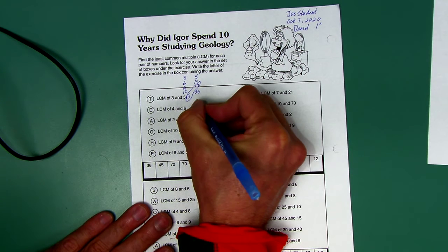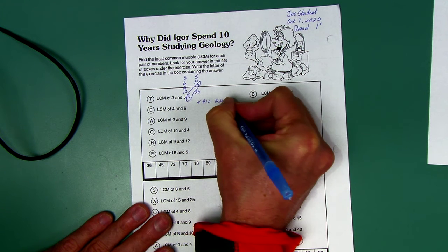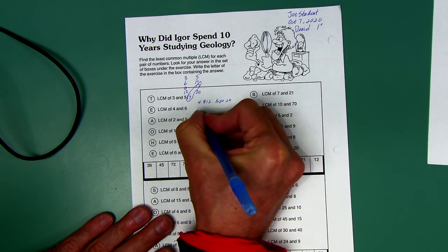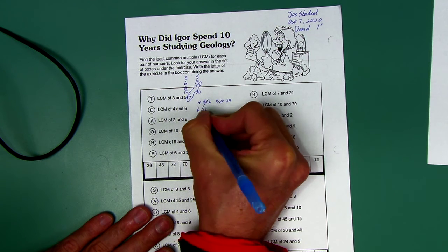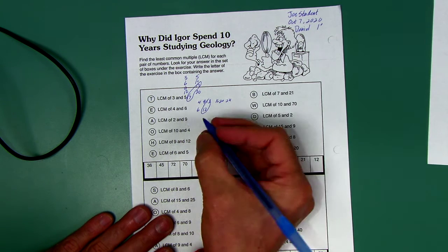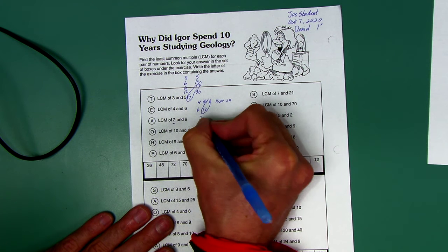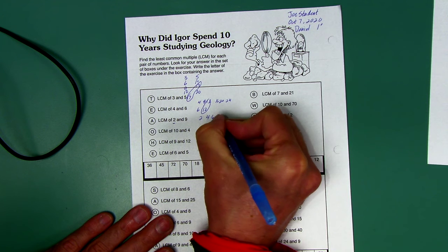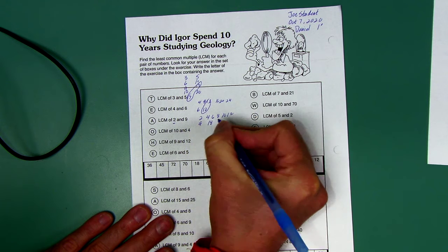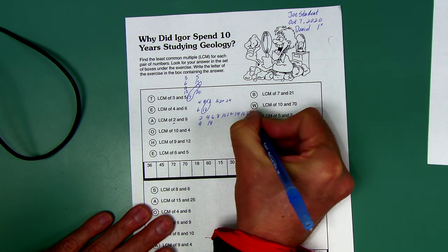Four and six: count by fours—4, 8, 12, 16, 20. It's a little bit of a guess how far you have to go before you find one that's the same. Six, twelve, we only went to the second one there. So the least common multiple of four and six is twelve. Two and nine: two is actually a prime number—2, 4, 6, 8, 10, 12. Nine: 9, 18. Let's go farther: 14, 16, 18. There we go.